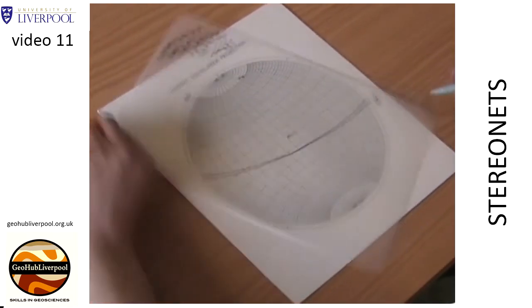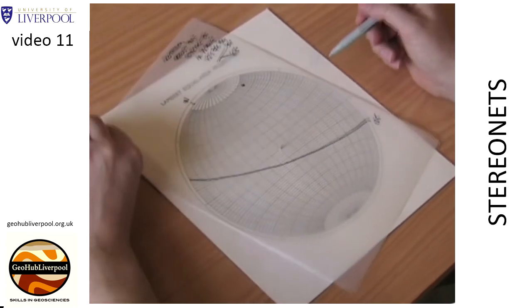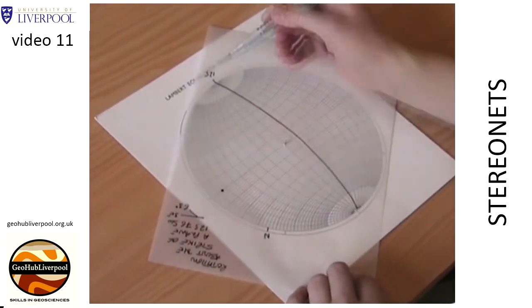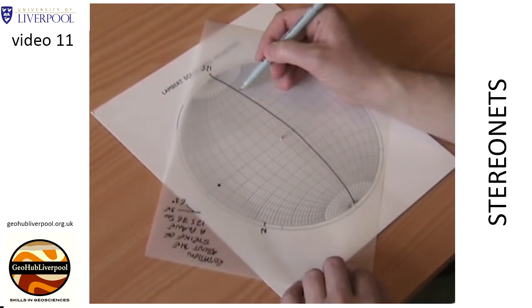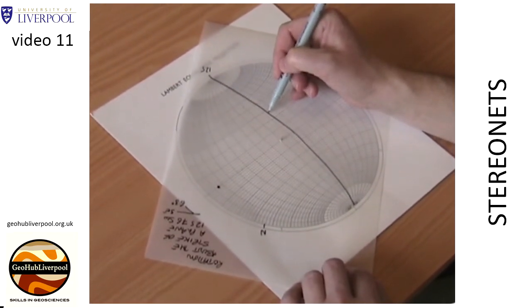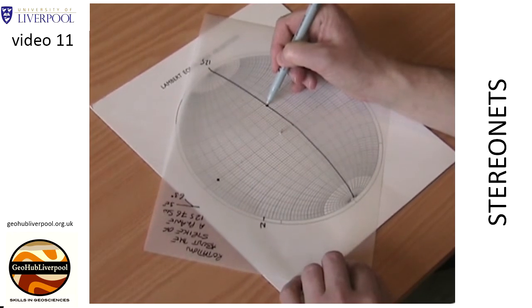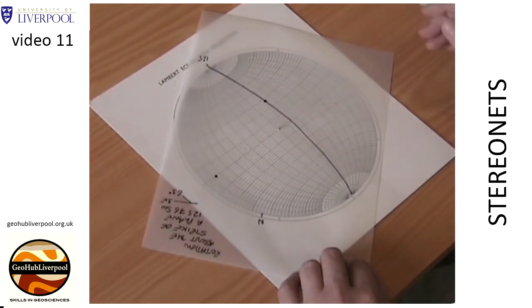Keep the tracing paper in the same position and count 63 degrees on the small circles from the north pole. Mark the point which represents the pitch of 63 degrees southeast for the sedimentary structures on the plane.